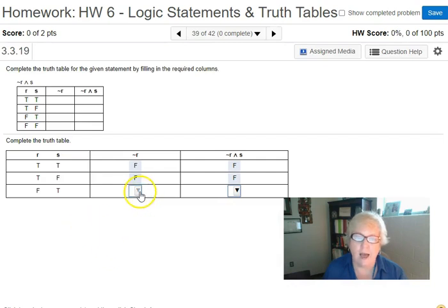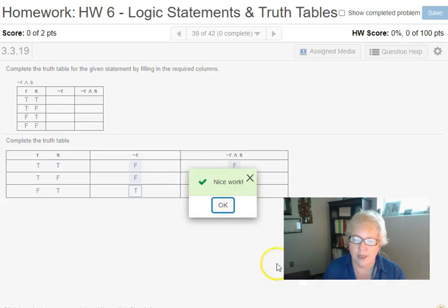I need the opposite of R. R this time is false, so I change that to true. Now I need not R and S. Not R is true, S is true. Since this is a conjunction and, the result is true. The only time and is true is if you have true and true. Check answer.